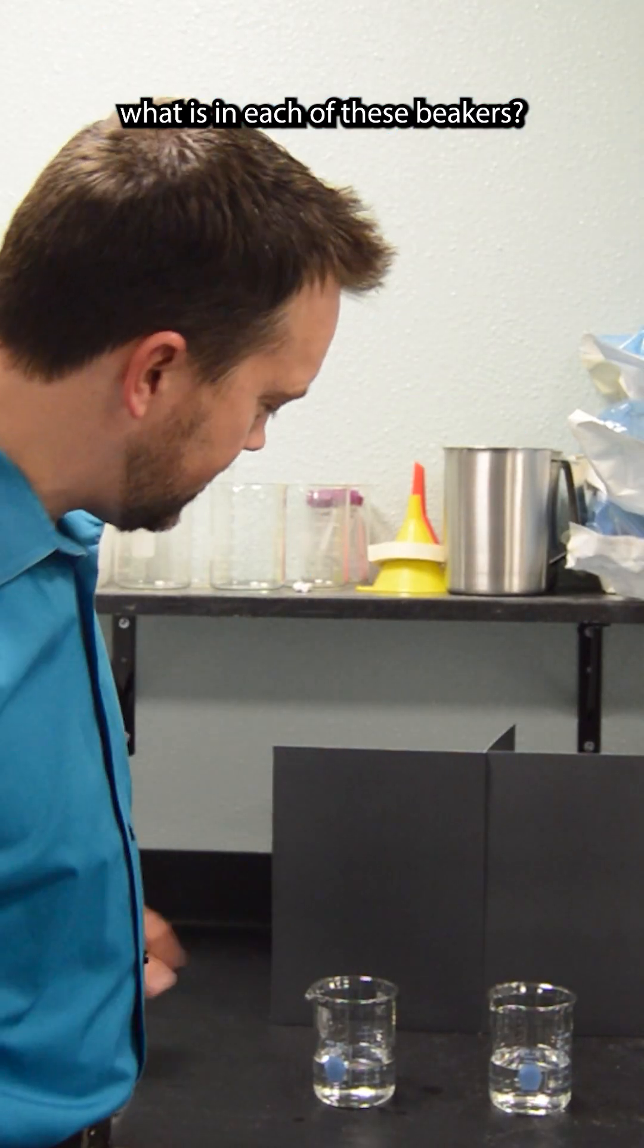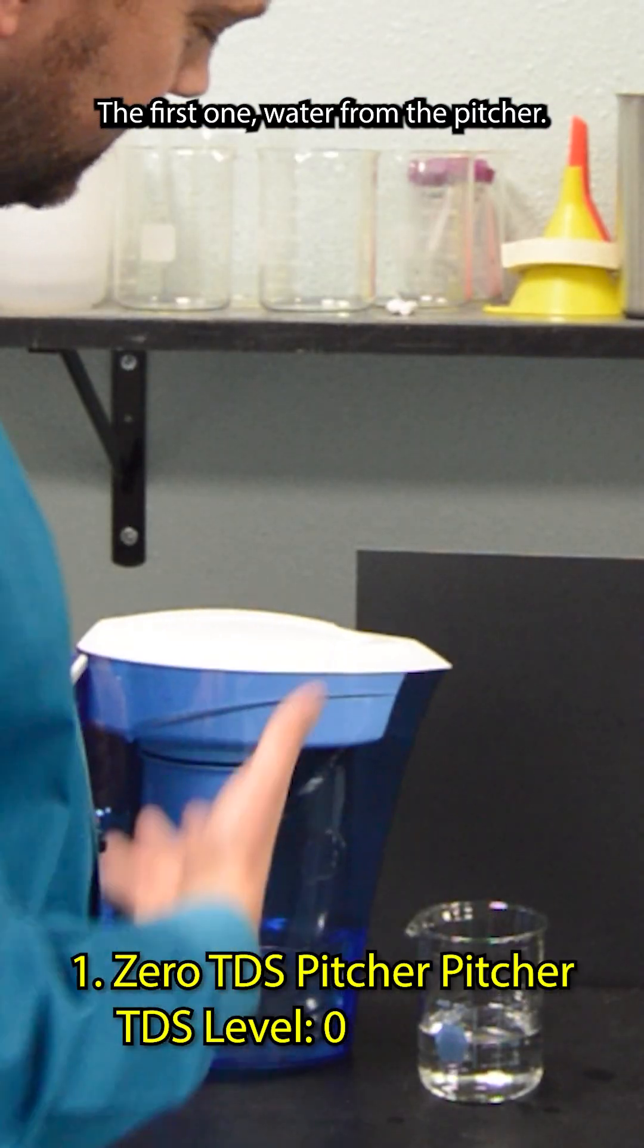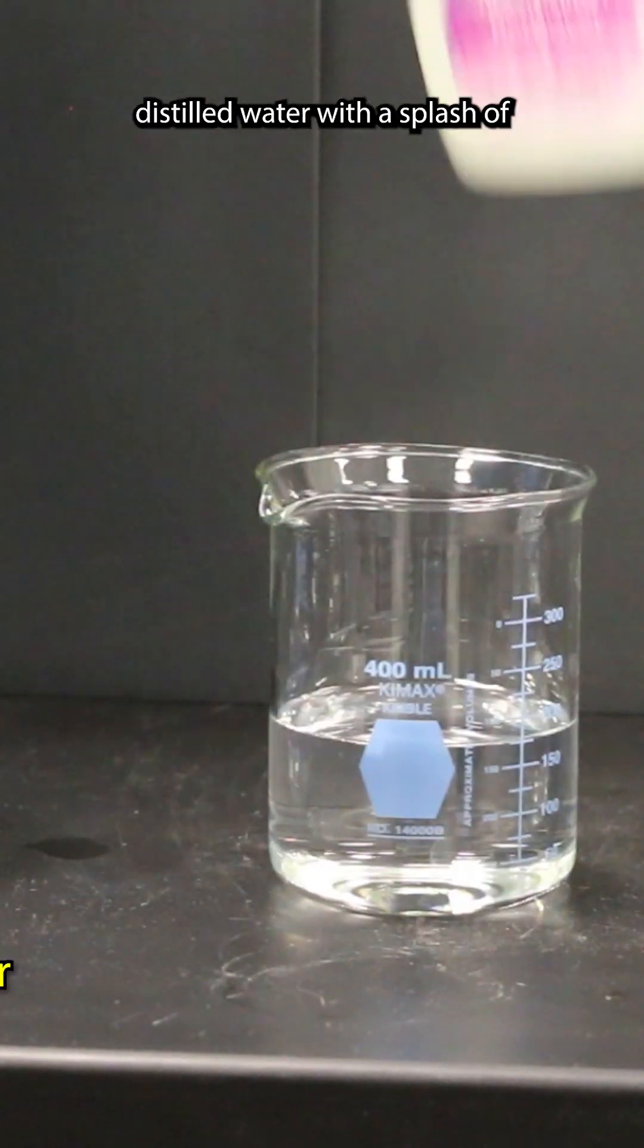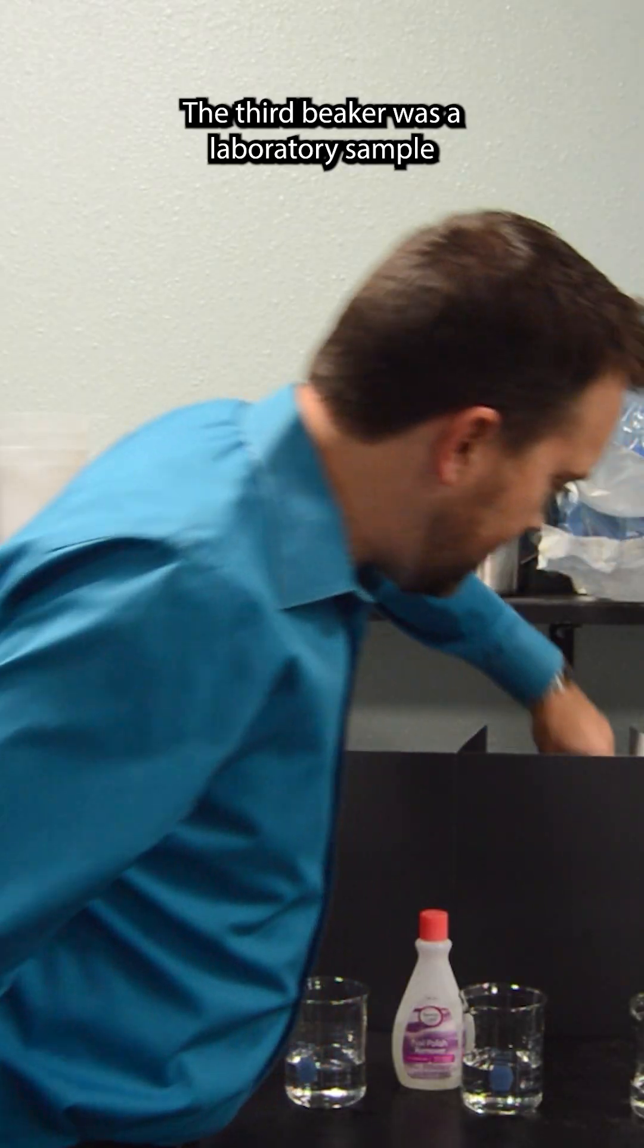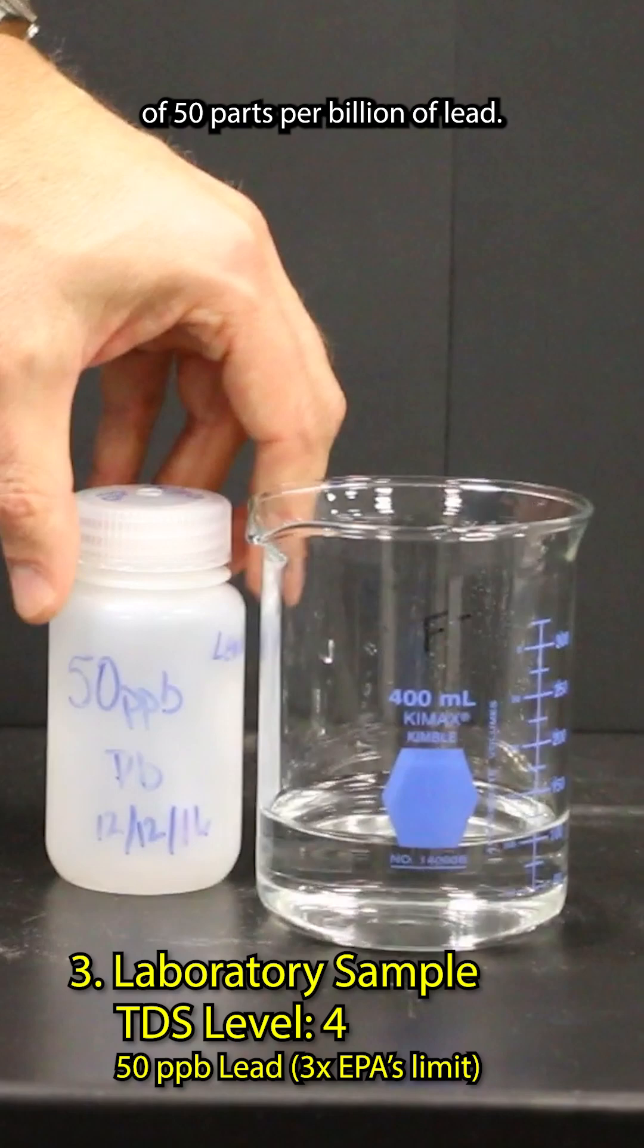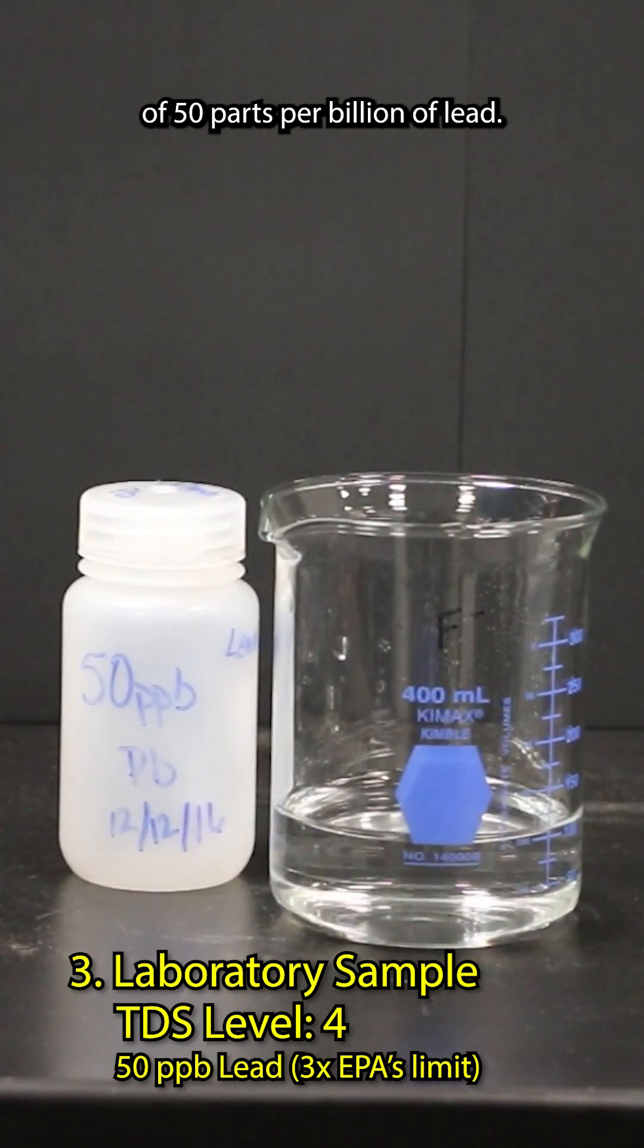What is in each of these beakers? The first one is water from the pitcher, the second is distilled water with a splash of nail polish remover. The third beaker is a laboratory sample of 50 parts per billion of lead.